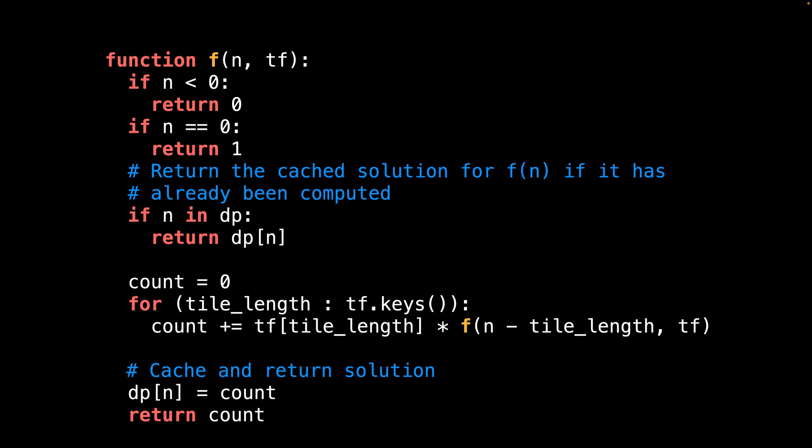Now let's take a look at the recursive function itself, which is what actually computes the different board tiling configurations. As input to the function, we provide n, the current board length, and TF, the tile frequency of each tile length. The tile frequency map is actually constant, you could pull it out to simplify this function if you wanted to.